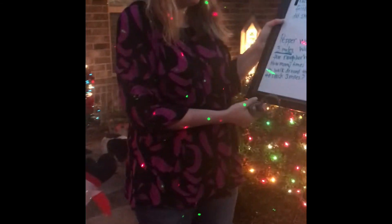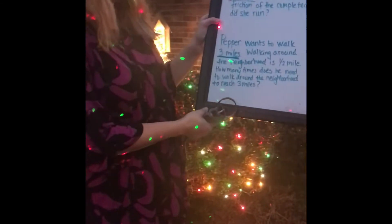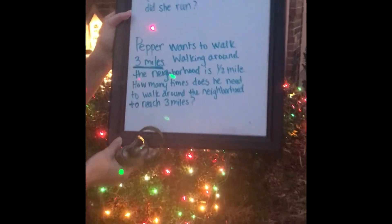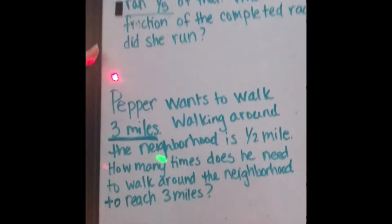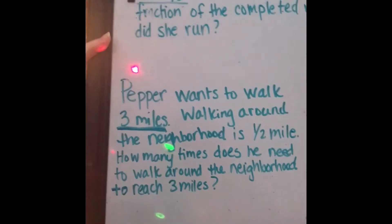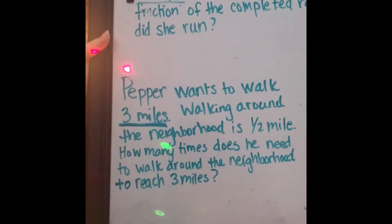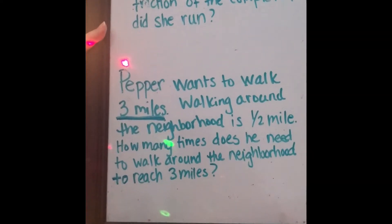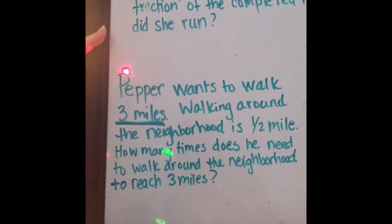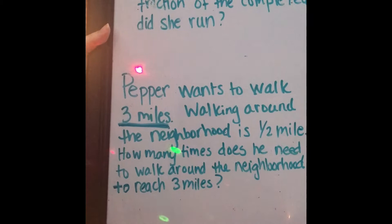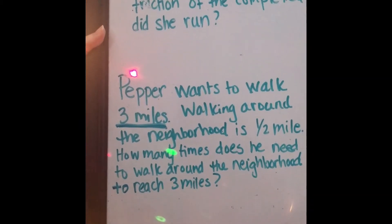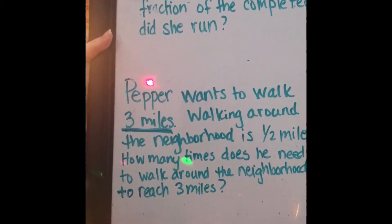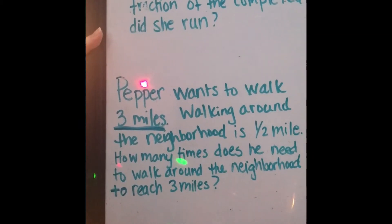Pepper likes to walk a little bit more than Lucy. He wants to walk three miles, and walking around the neighborhood is half a mile. How many times does he need to walk around the neighborhood to reach three miles? Solve this one, and then at the end we'll go over all of these problems.